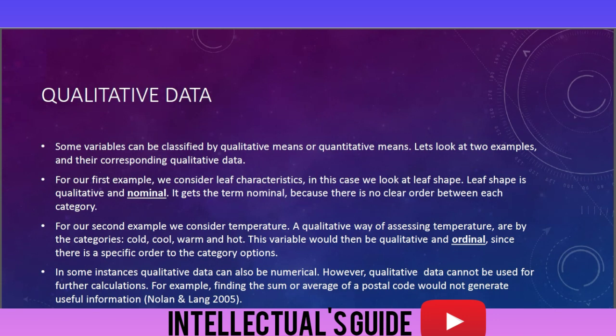For our second example, we consider temperature. A qualitative way of assessing temperature are by the categories: cold, cool, warm, and hot. This variable would then be qualitative and ordinal, since there is a specific order to the category options.